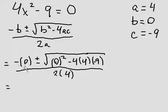Negative 0 is just 0, we don't even write it. Then we get plus or minus. 0 squared is, again, 0.